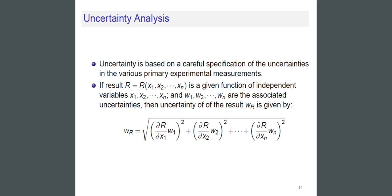Uncertainty analysis. Uncertainty is based on a careful specification of the uncertainties in the various primary experimental measurements. If the result r = r(x1, x2, …, xn) is a given function of independent variables x1, x2, …, xn with uncertainties w1, w2, …, wn.